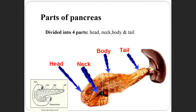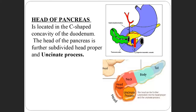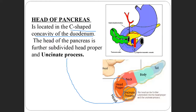The head of the pancreas is present in the C-shaped concavity of the duodenum. It has two parts: the head proper and another part called the uncinate process of the pancreas.